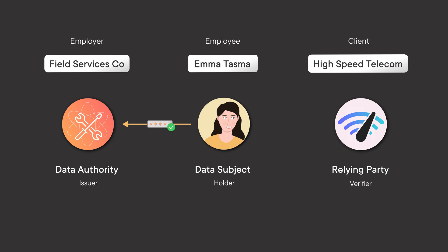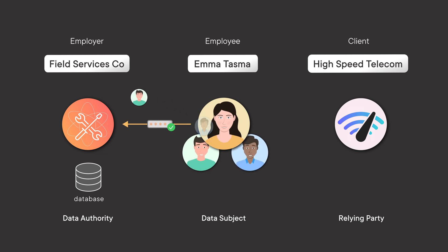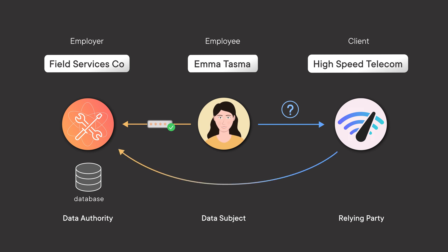In the current model, Emma would log into Field Services and she would be a record in a database along with a whole load of other employees. She can access those internal services just fine using that. But when she goes off to a client site, all those different clients would need to have a connection back to the Field Services data source so they can check whether Emma is a trusted employee.